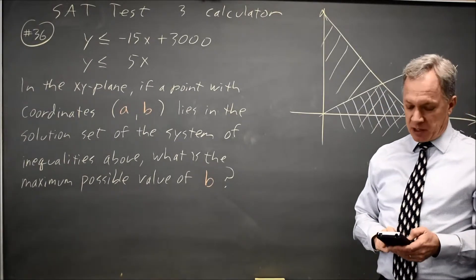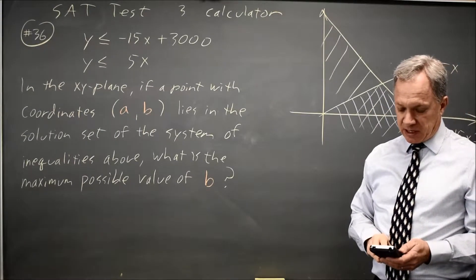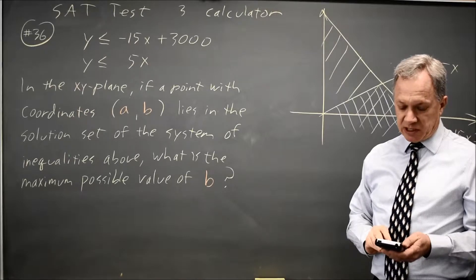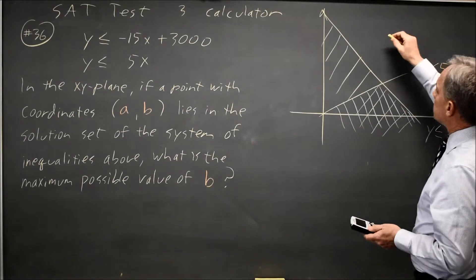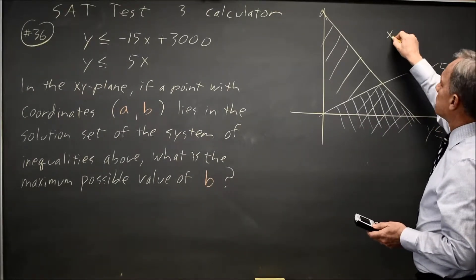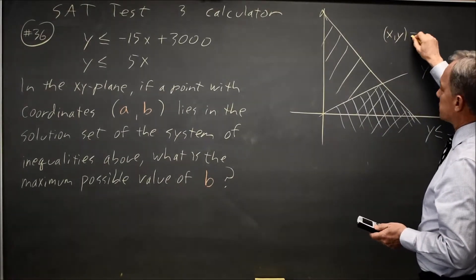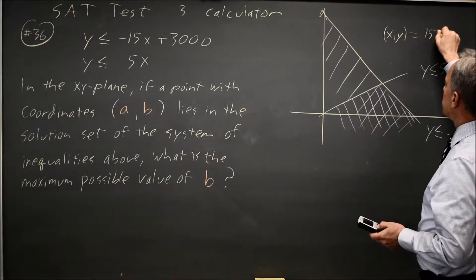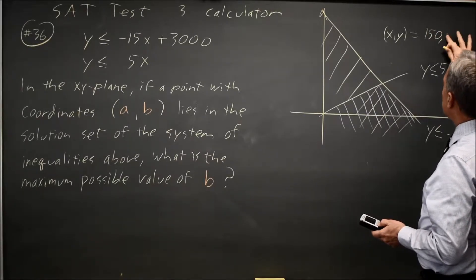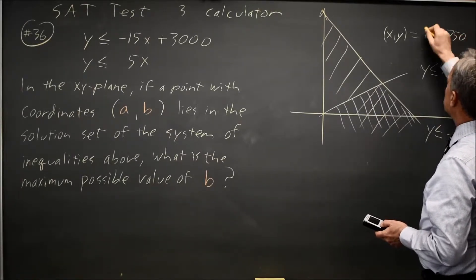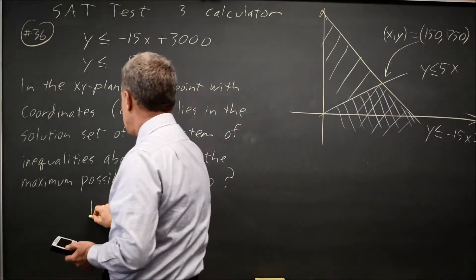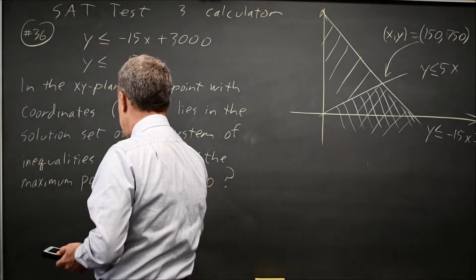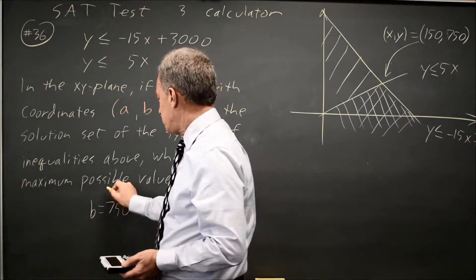So having graphed it on my calculator, I can just calculate the point of intersection, hit enter three times, and the calculator says my x, y-coordinates at the point of intersection are x equals 150 and y equals 750, which gives us B equals 750. That's the answer to their question.